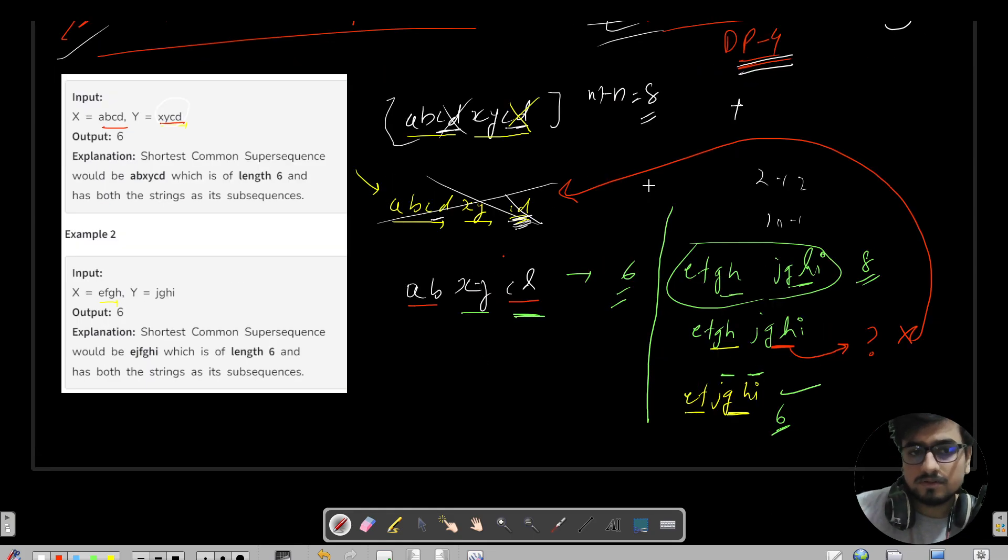So in the whole observation, what is the observation? Can't you see that we are actually finding the LCS of X and Y and then we are omitting it in the total length. So I will just say M plus N minus LCS of X and Y.